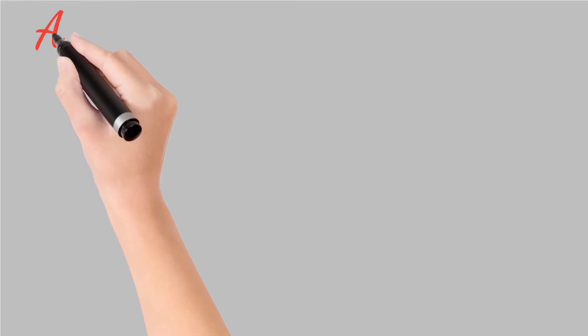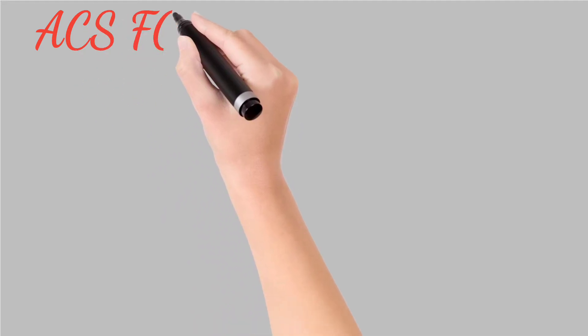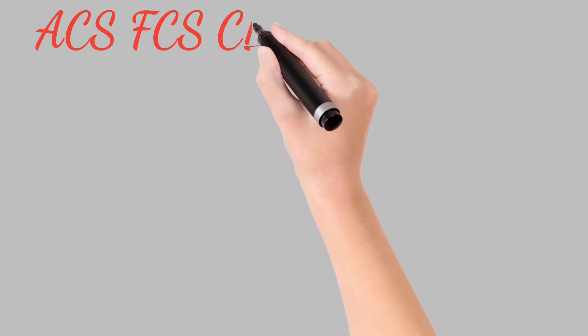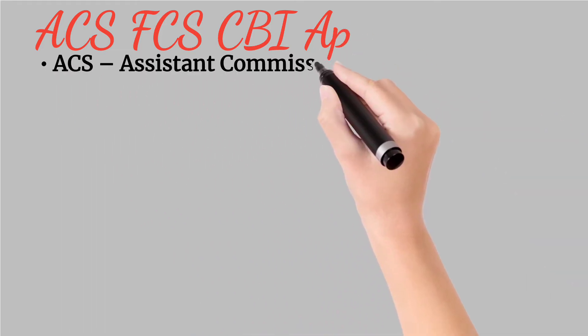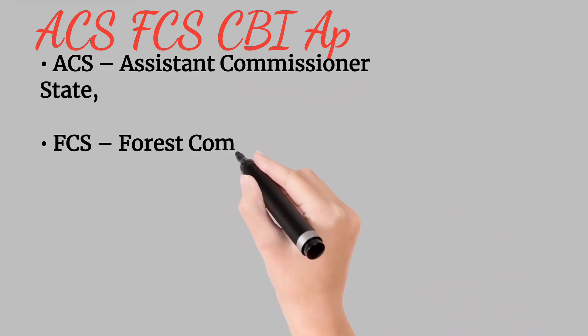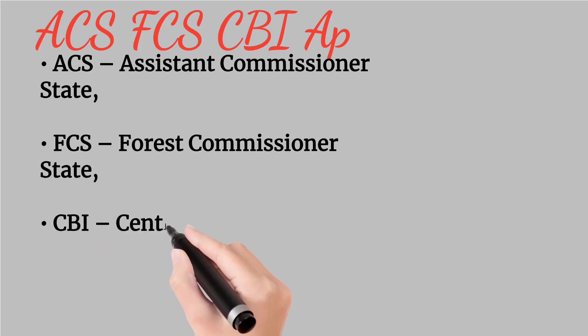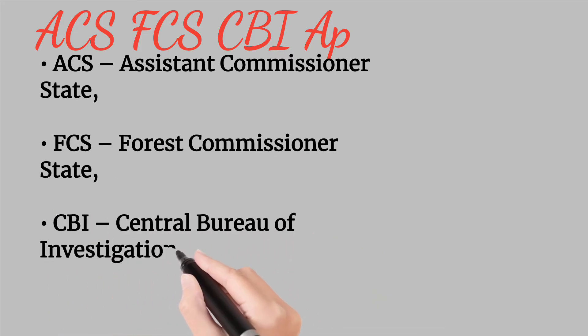You just remember these four names to easily remember the classification. These are ACS - Assistant Commissioner State, FCS - Forest Commissioner State, CBI - Central Bureau of Investigation, and AP - Assistant Professor.